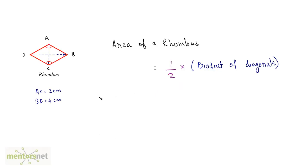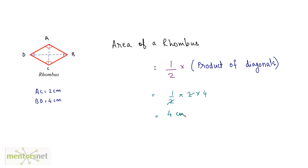We have a rhombus. The area of a rhombus is half into the product of its diagonals. The diagonals are the lines connecting the opposite vertices. So the area of this rhombus will be half into the length of AC times the length of BD. We have AC as 2 and BD as 4, so half into 2 into 4 equals 4 square centimeters.